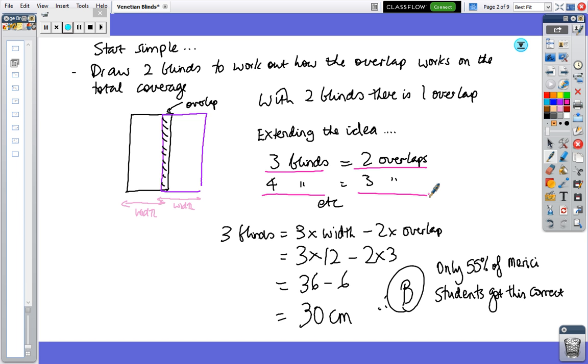So in this particular question, we were looking for three blinds. So three times the width minus two overlaps. The mathematics is very simple and you get an answer of 30 centimeters, which is answer B. And surprisingly, only half the students got that one right in 2005 when they did that.